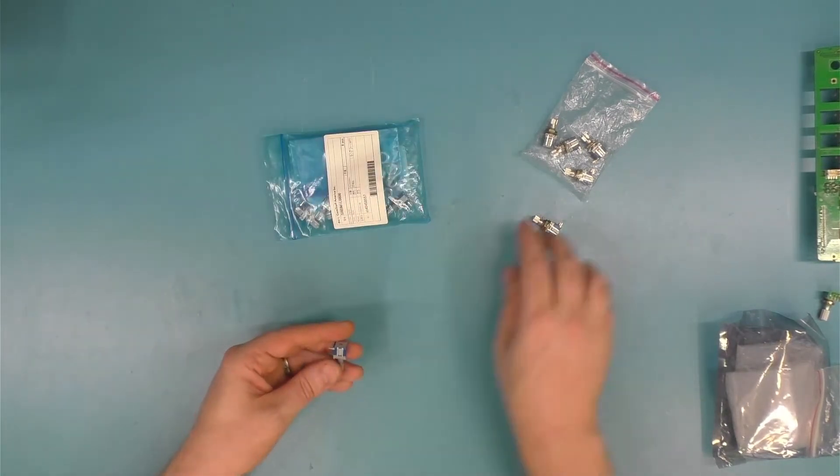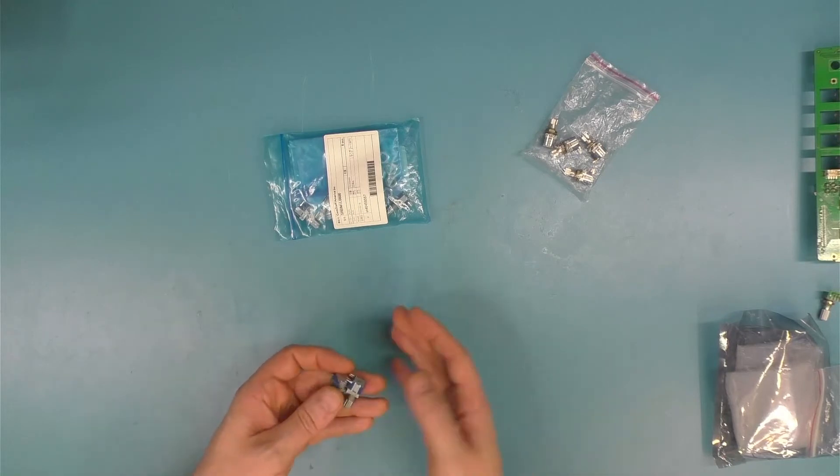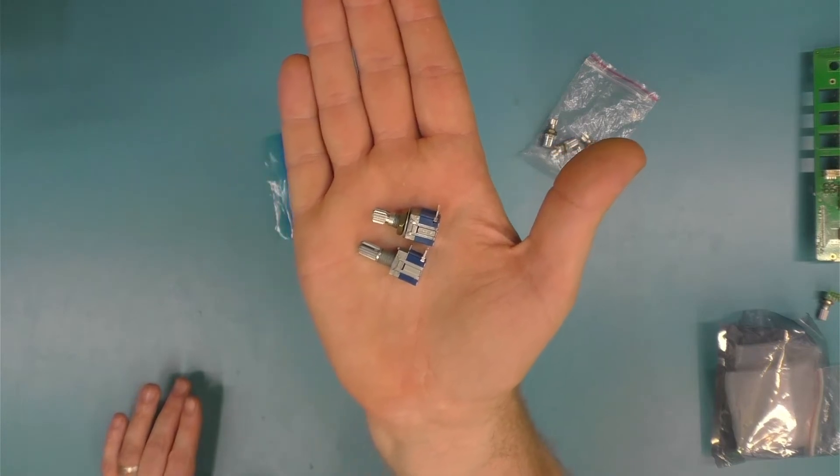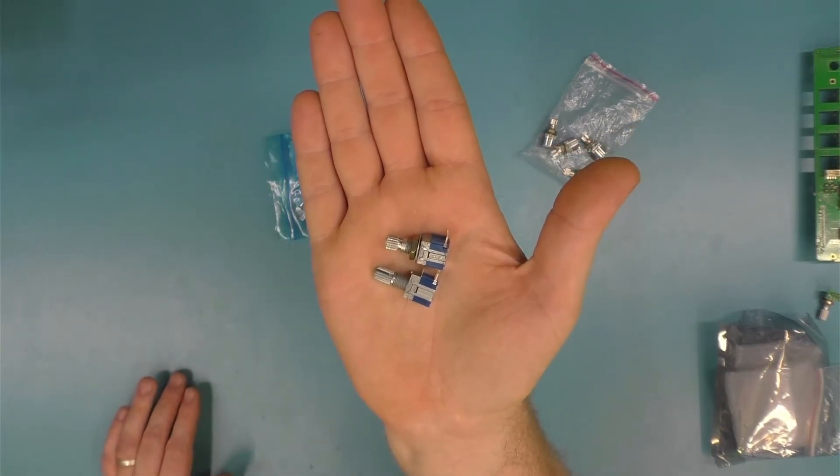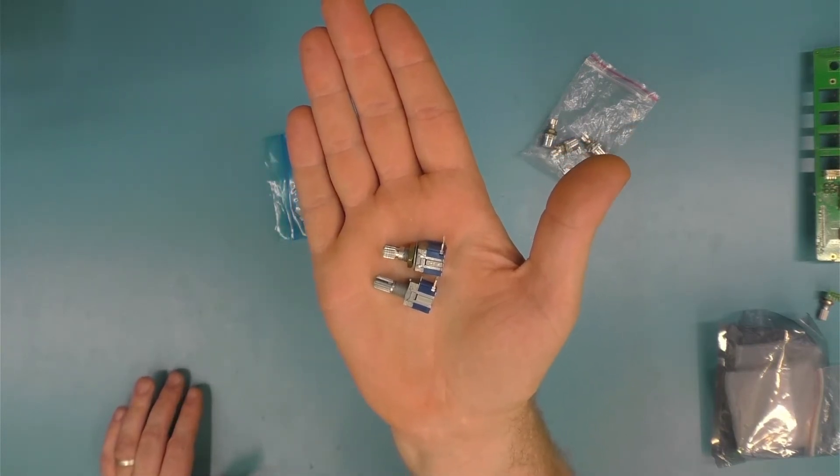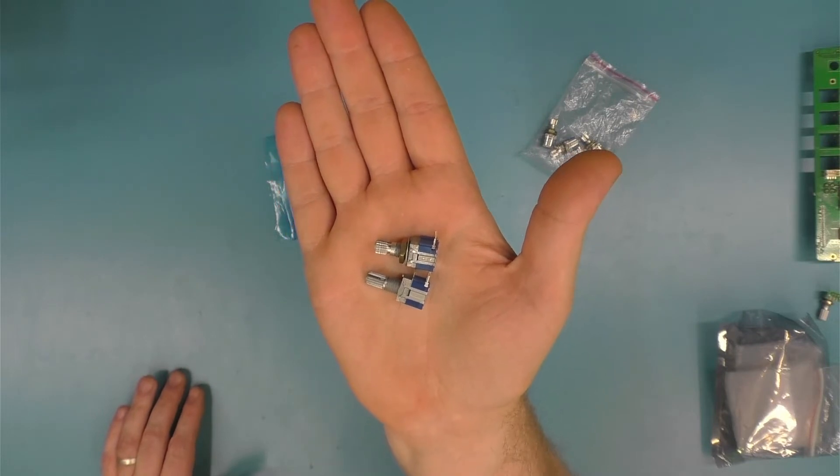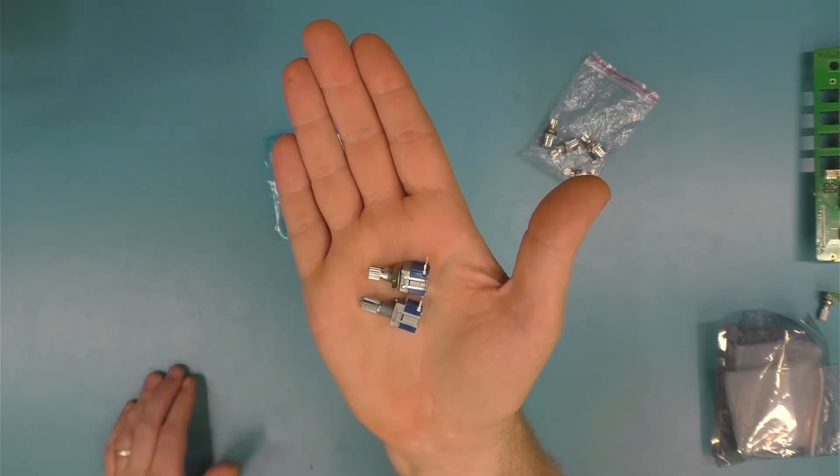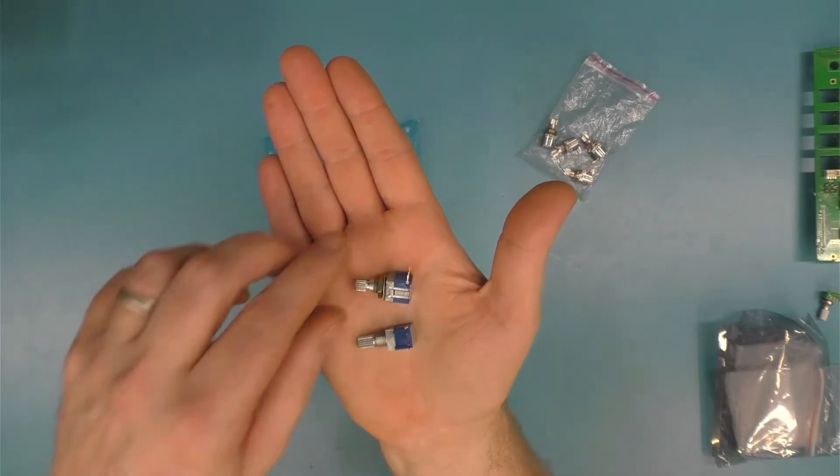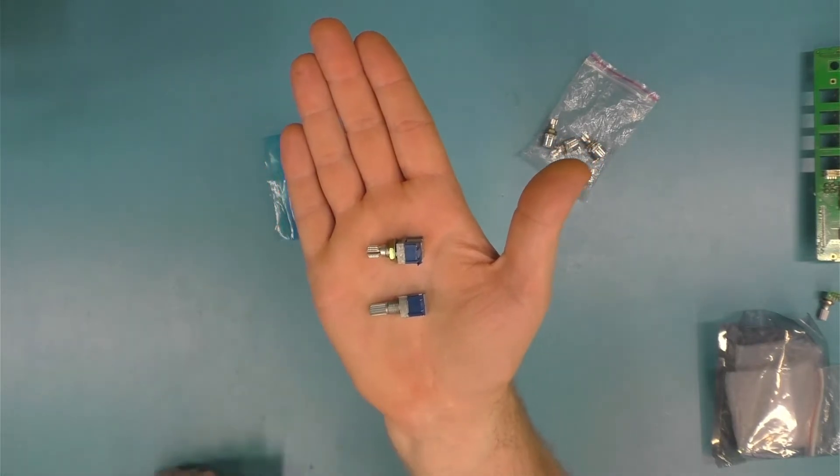And these are authentic controls. And you can tell immediately the difference between the controls. Which one is the authentic control and which one is the fake control.